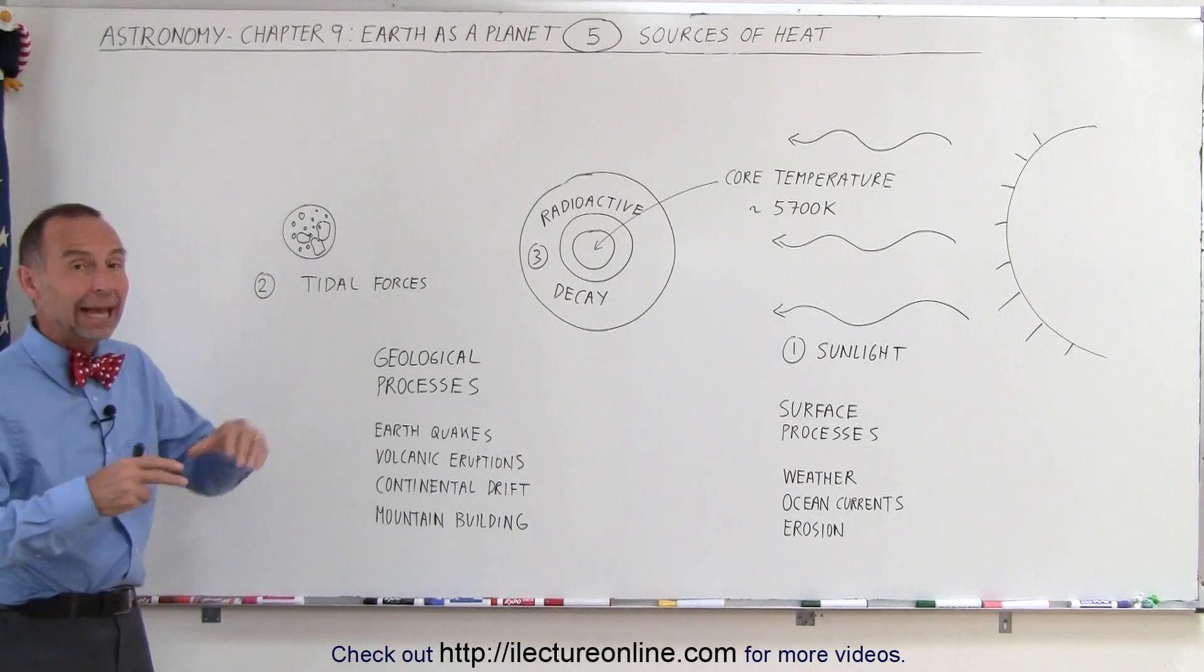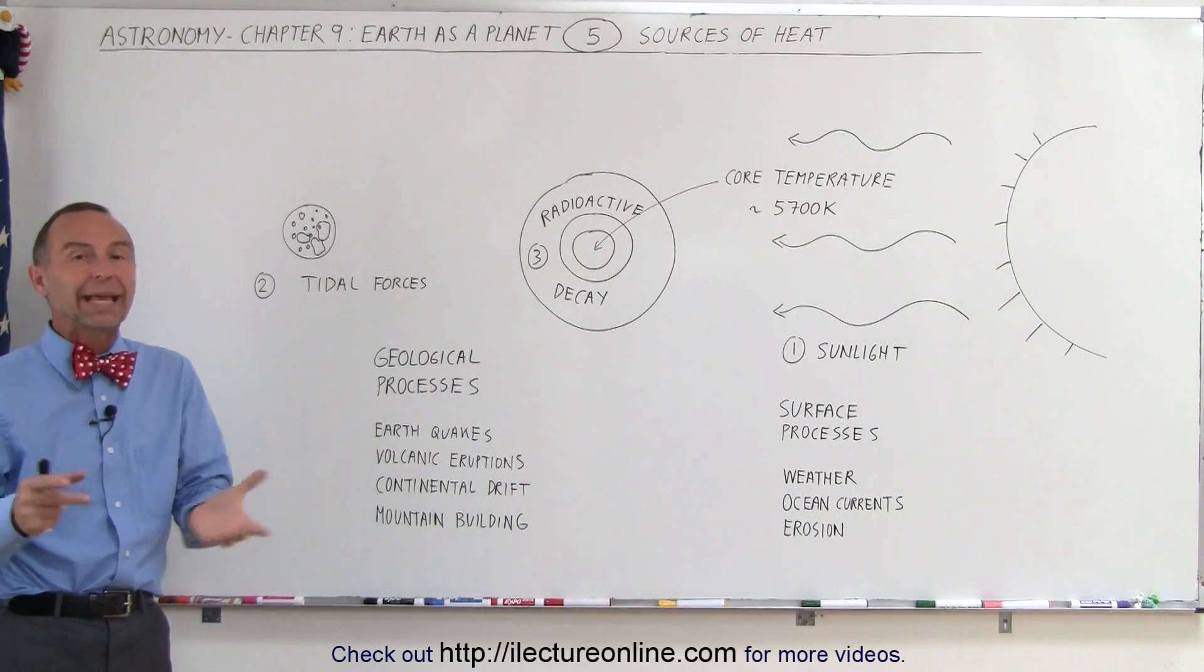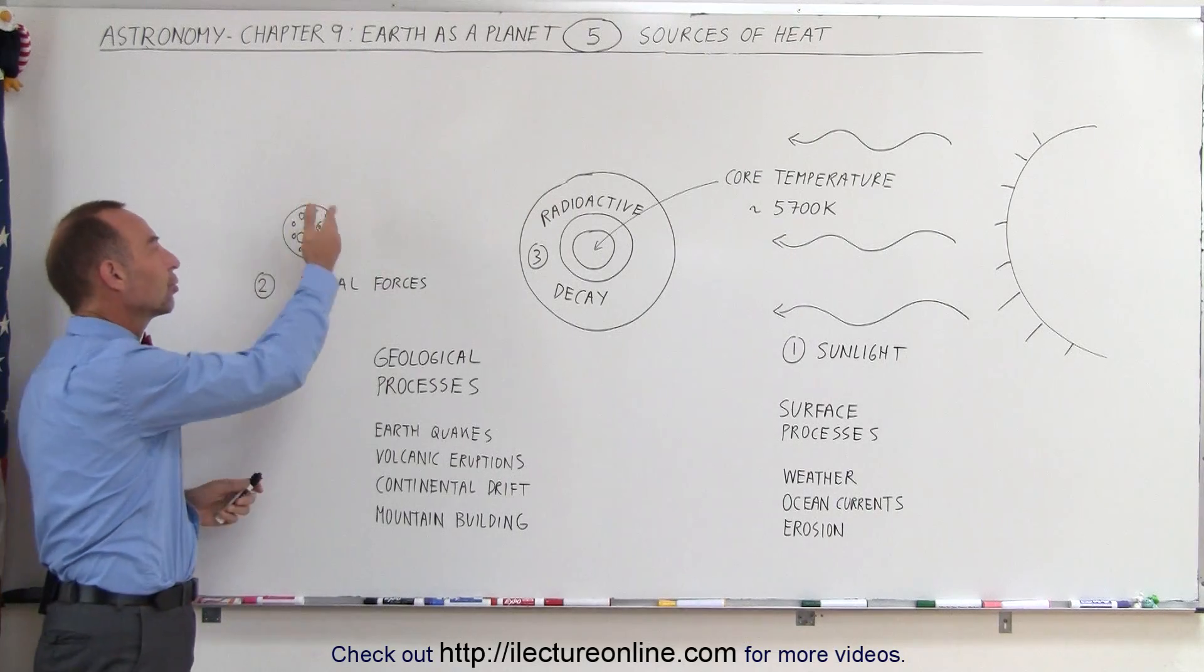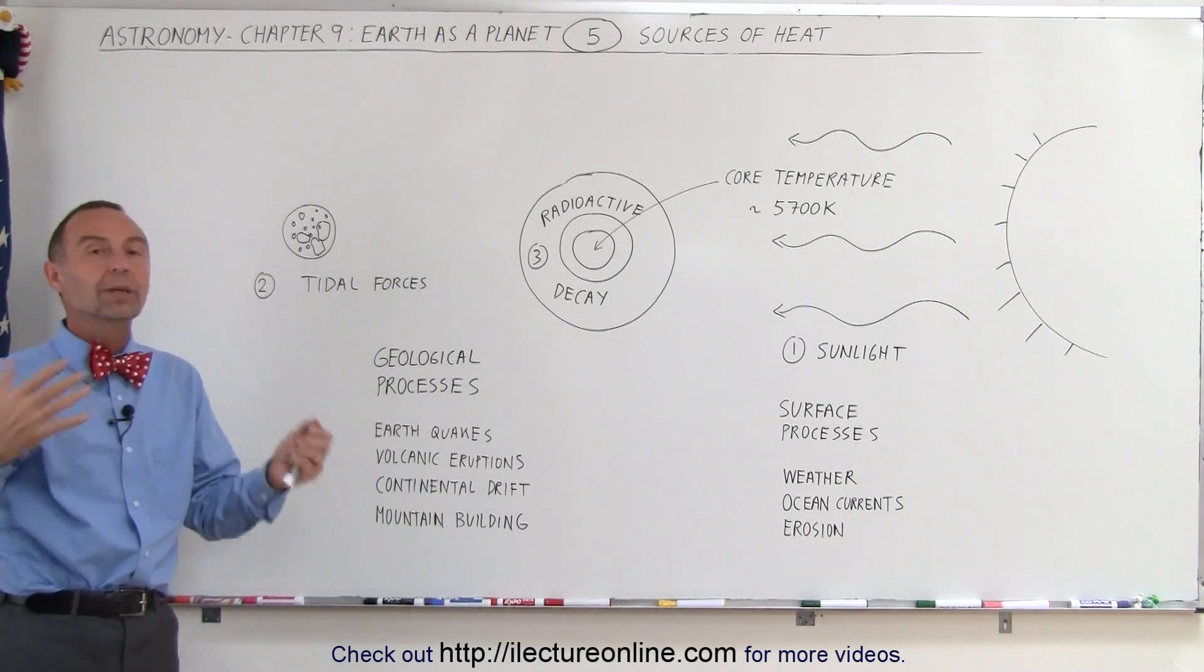We can go, for example, to the Moon and notice that some of the surface of the Moon probably hasn't changed for billions of years. It is covered with craters that have accumulated over the millennia.